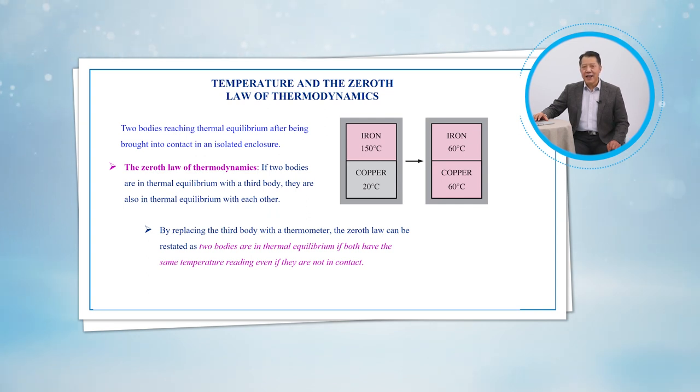The zeroth law was first formulated and labeled by R.H. Fowler in 1931. As the name suggests, its value as a fundamental physical principle was recognized more than half a century after the formulation of the first and the second laws of thermodynamics. It was named the zeroth law since it should have preceded the first and the second laws of thermodynamics.